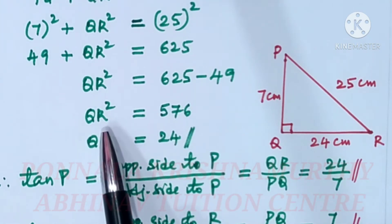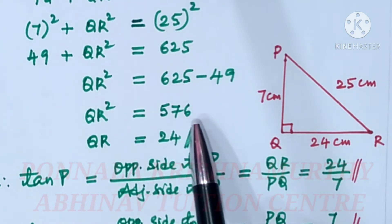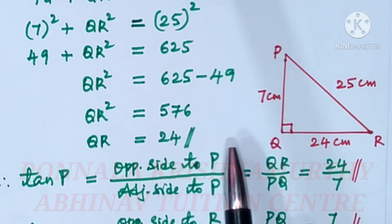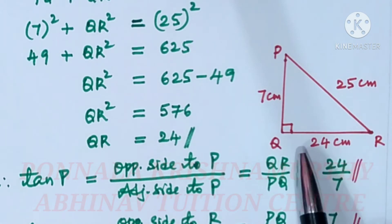Square root of 576 is plus or minus 24, but since these are lines, we have to take only positive. So QR is equal to 24. Here we have 7 centimeters, this is 24 centimeters, this is 25 centimeters.